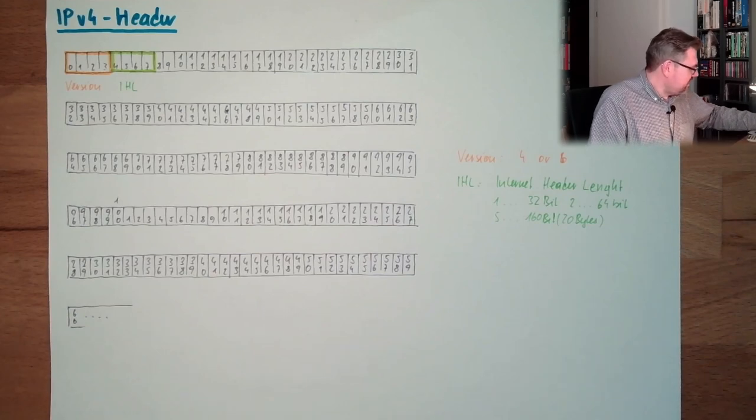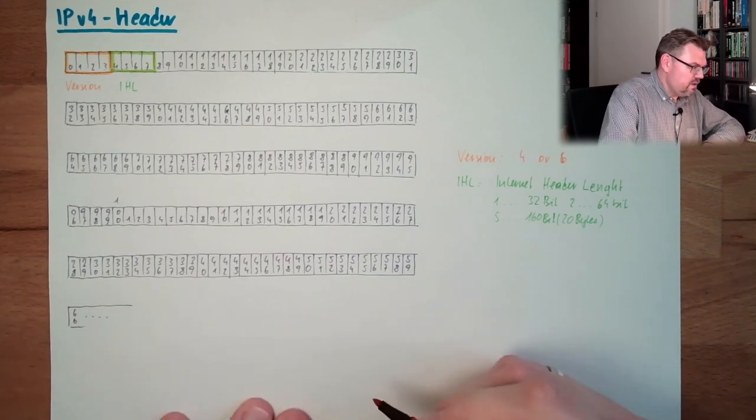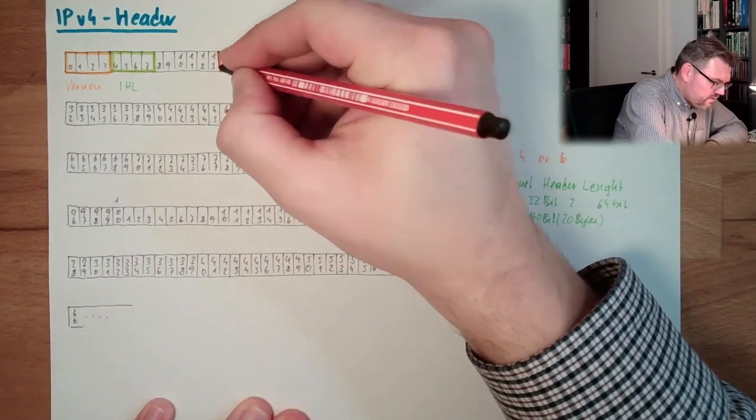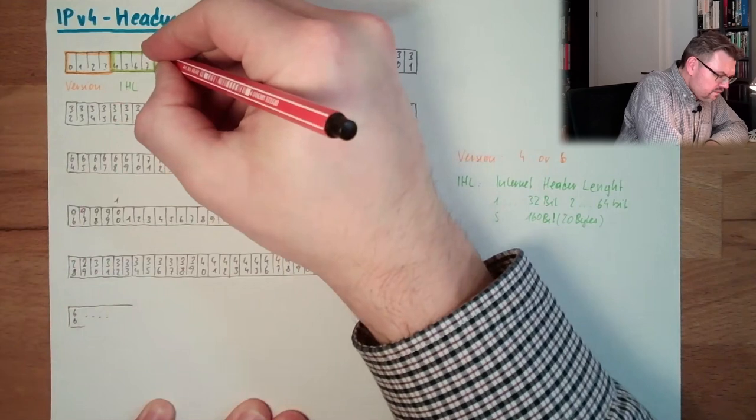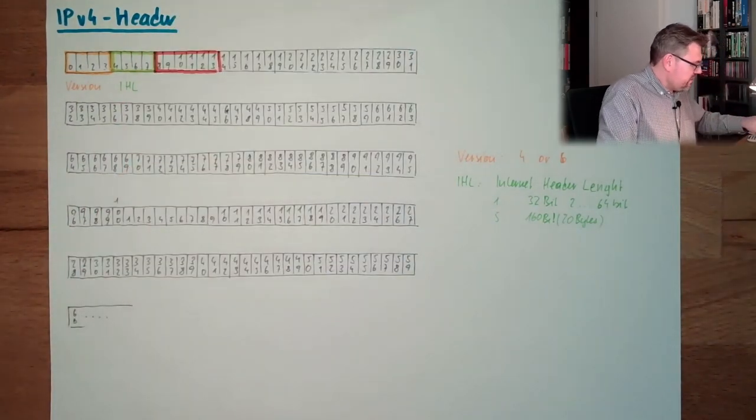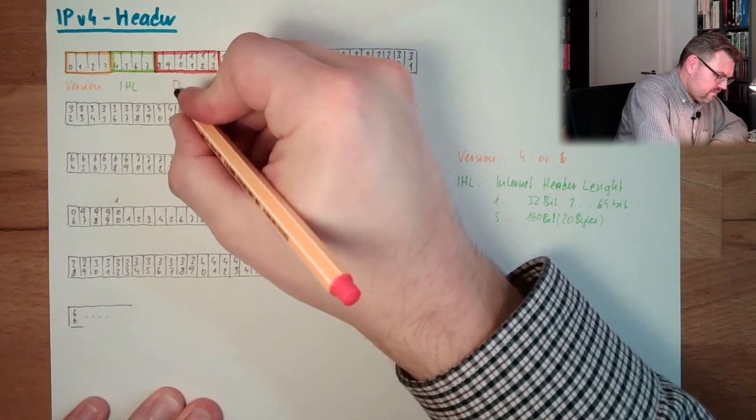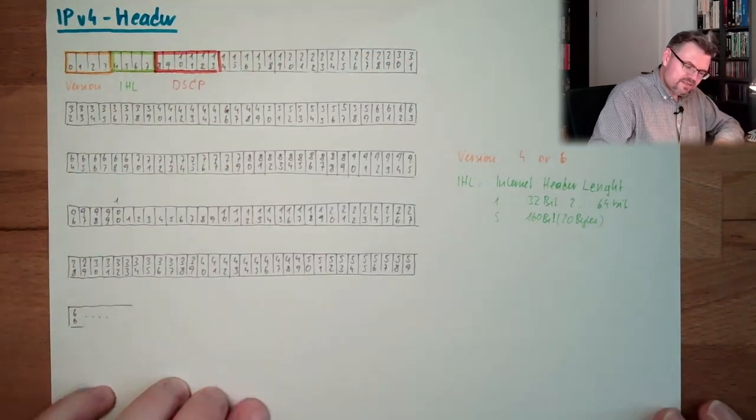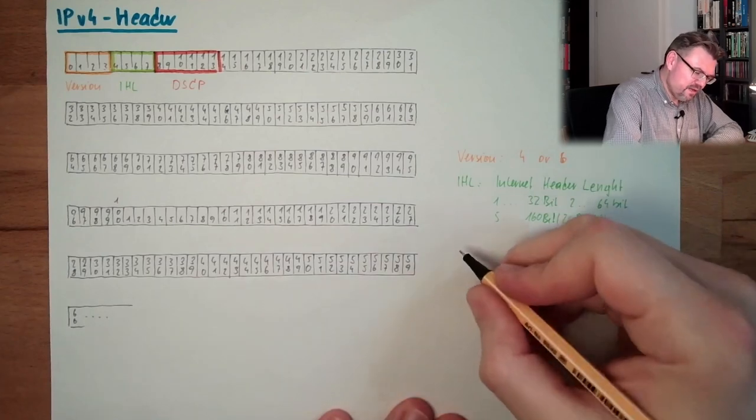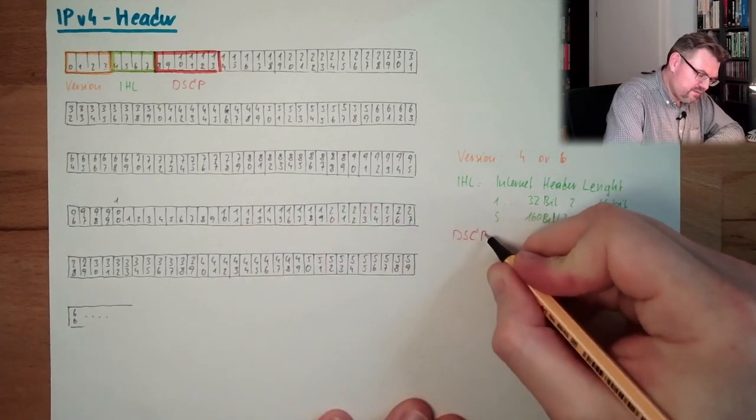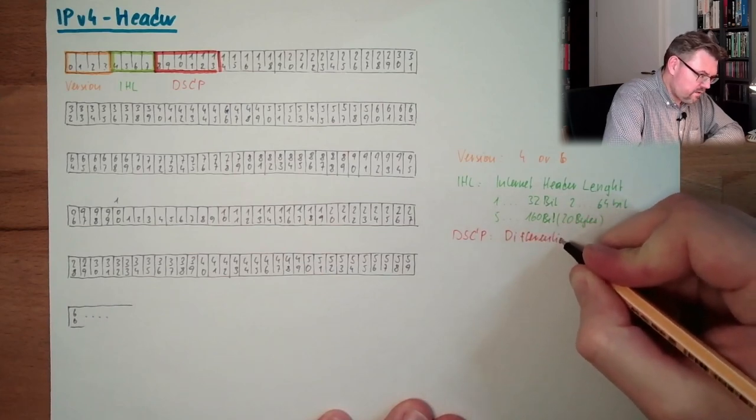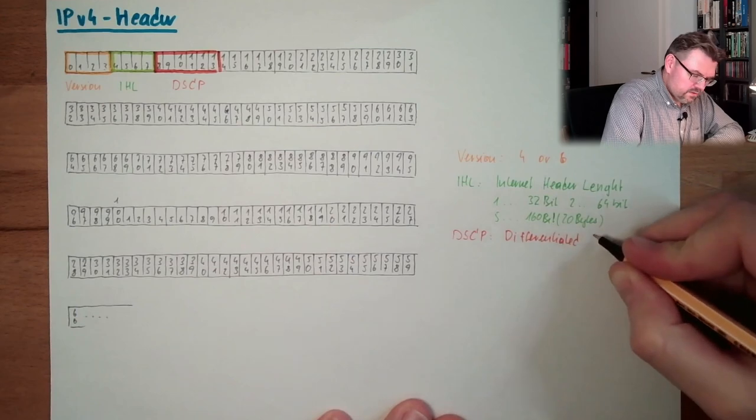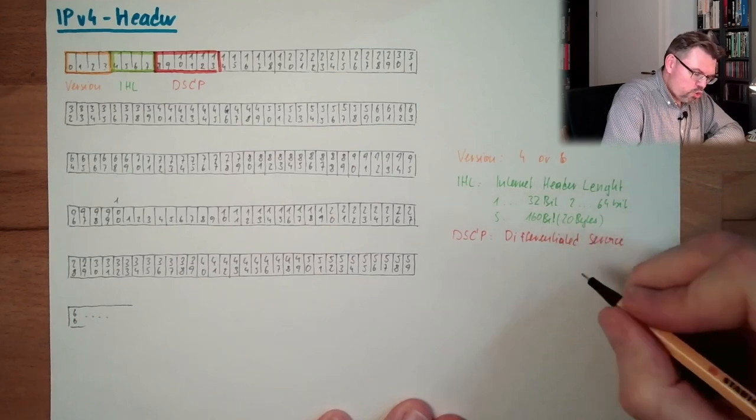The next thing up to 13, this is the so-called DSCP. In previous versions it had a different meaning. But currently it's defined as DSCP. This means Differentiated Service Code Point.